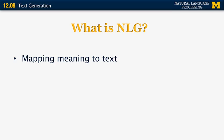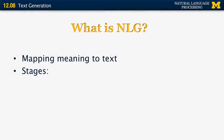So what is NLG? One of its most important components is mapping meaning to text. This meaning is typically represented in some semantic form, for example CCG or FUG. The stages are the following. First, you have to perform content selection — determining what content you want to share with the user. Then you perform lexical choice, which is deciding what words to use, for example whether to use a nominalization or a verb to express a certain concept.